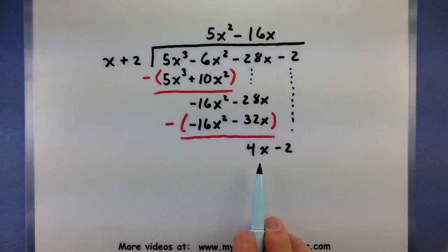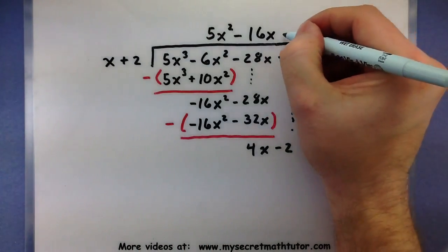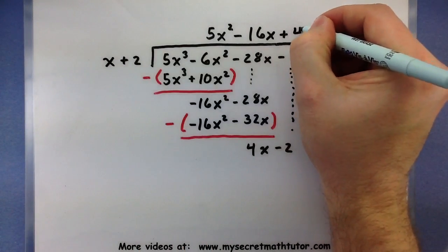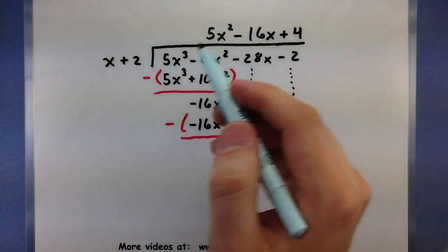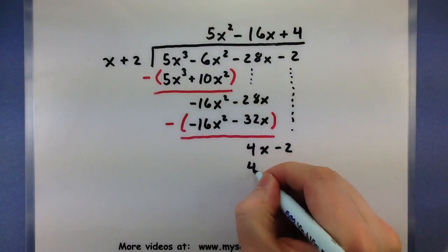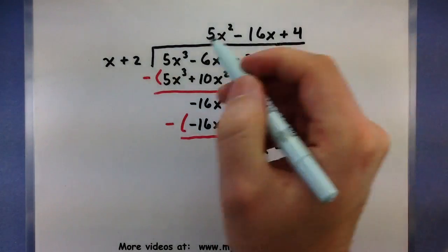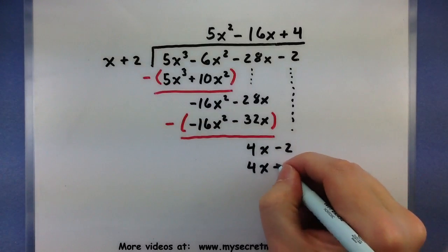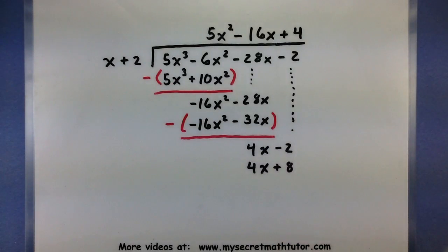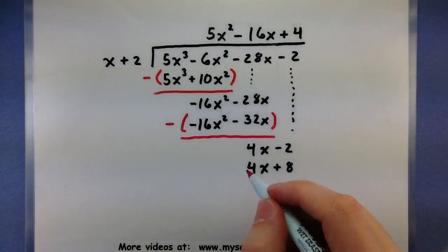So what do I have to multiply x by in order to get a 4x? Well, I'll have to multiply by 4. So 4 times x, 4x. 4 times a 2, I'll get an 8, and then of course we want to subtract this away.